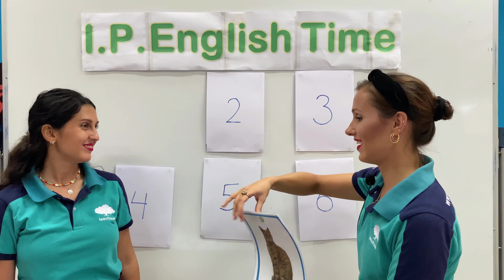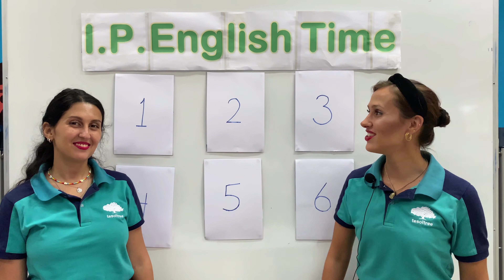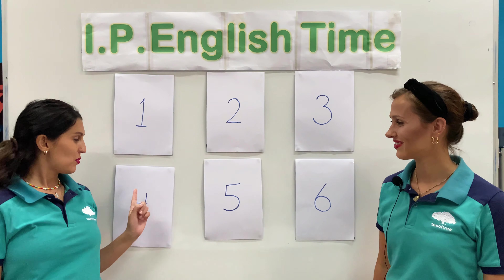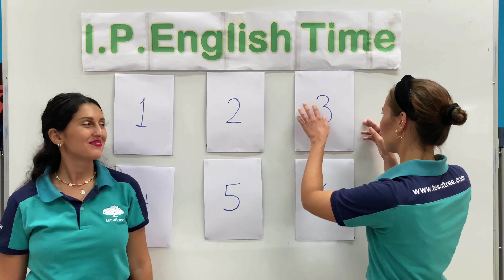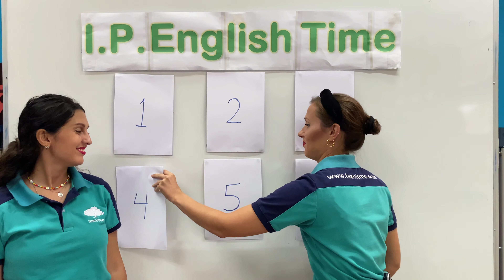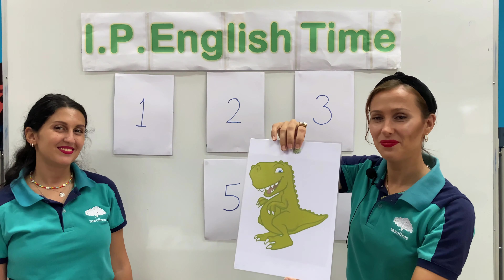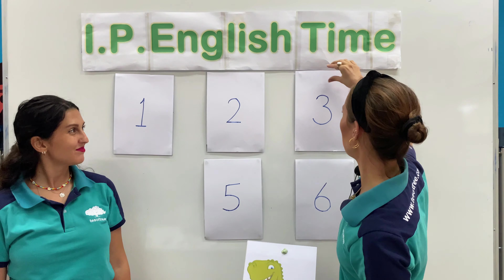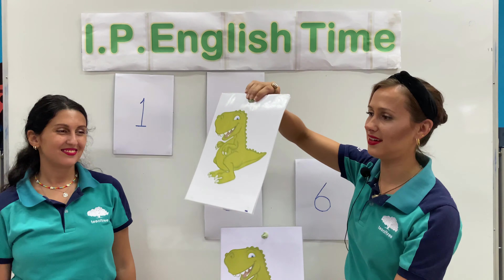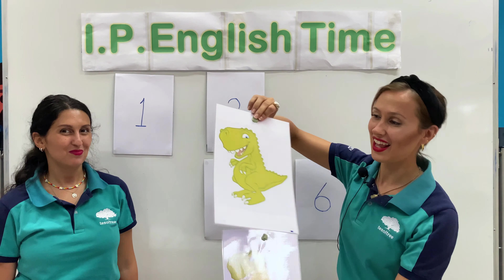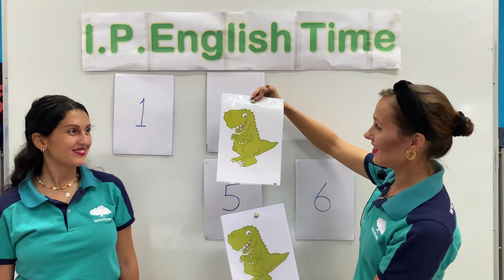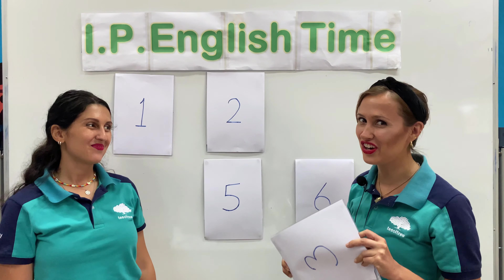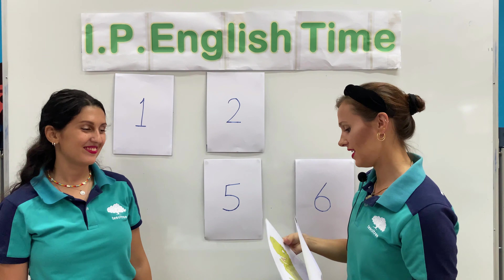Okay, let's try again. Teacher Val, can you give me two numbers please? Number one and number four. Number four, what is it? Dinosaur. And number three, what is it? Dinosaur. Is this a match? Yay, we have our first match! This is exciting.